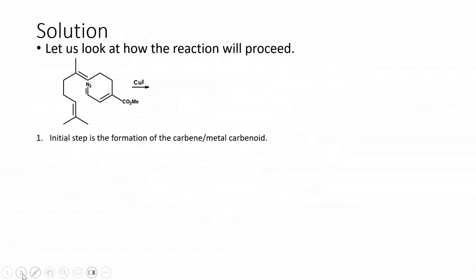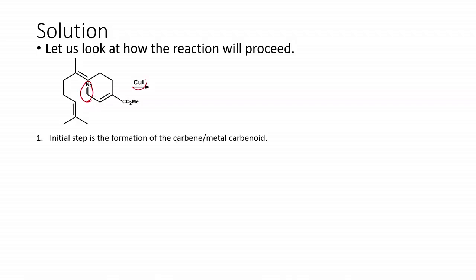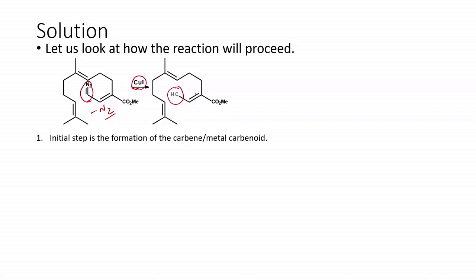As usual, we will start with the carbene reaction. The diazo unit is lost in the presence of the metal catalyst. Copper iodide initiates the carbene formation — the loss of nitrogen leads to the carbene. For simplicity, we will only talk about the carbene and not the carbenoid derivative. The first step is carbene formation. We have one double bond close to the carbene here and another double bond there. We are going to see which one undergoes the carbene insertion reaction.